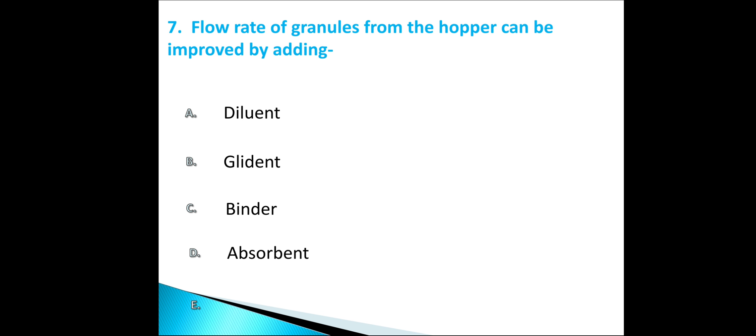Question number 7. Flow rate of granules from the hopper can be improved by adding: Diluent, Glidant, Binder, Absorbent. Diluent generally is used to increase the bulkiness of the tablet composition. Binder is used to increase the compactness. Absorbent is used to absorb something. And glidant is used to increase the flow rate of granules from the hopper. So option B is correct for question number 7.